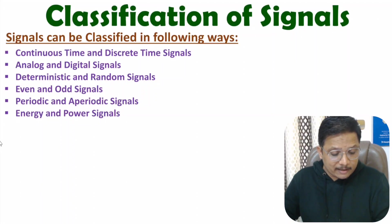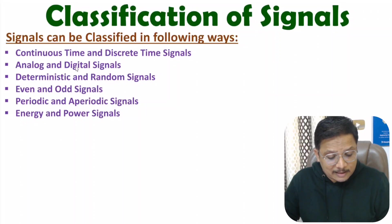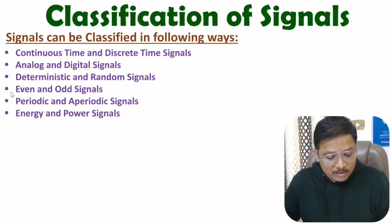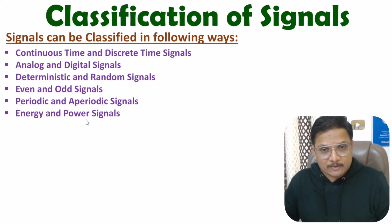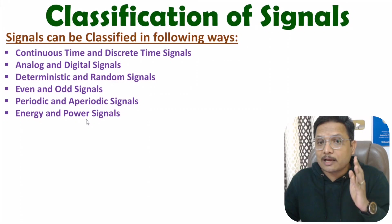Signal can be classified in many different ways: as per continuous time and discrete time signals, analog and digital signals, deterministic and random signals, even and odd signals, periodic and aperiodic signals, as well as energy and power signals. Let us start with the first classification — continuous time and discrete time signals.